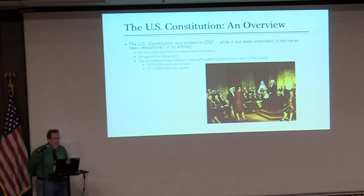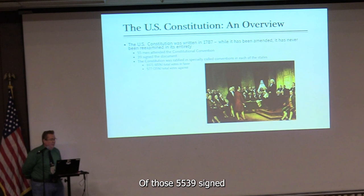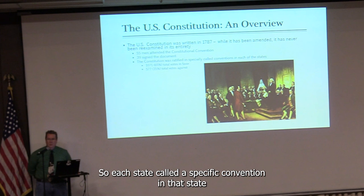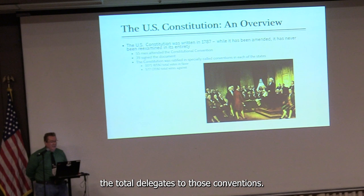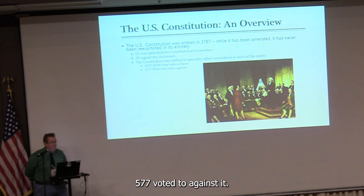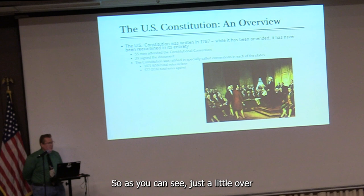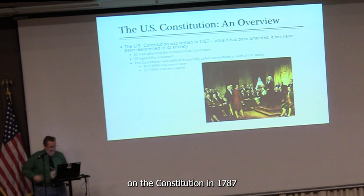If you recall your U.S. history, you will note that 55 men attended the Constitutional Convention. Of those 55, 39 signed the actual document. Then it was ratified — each state called a specific convention to approve or disapprove. The total delegates to those conventions: 1,071 voted to approve it and 577 voted against it, across those 13 states. So just a little over 1,600 — not quite 1,650 — people voted on the Constitution in 1787, or 1788 to be precise.